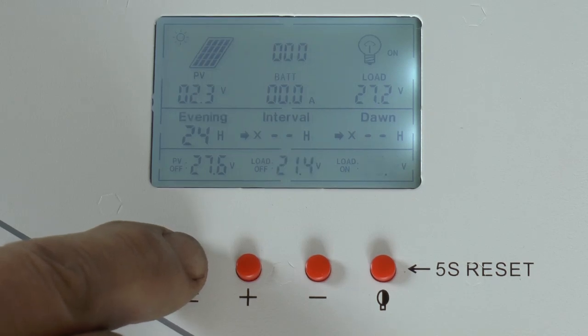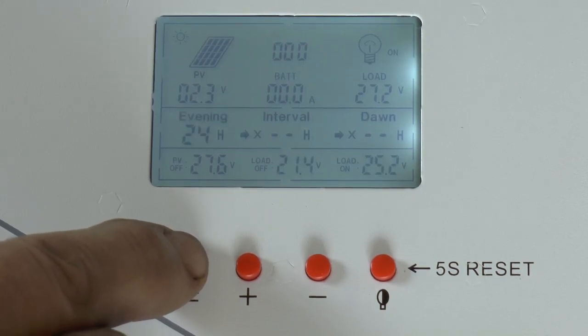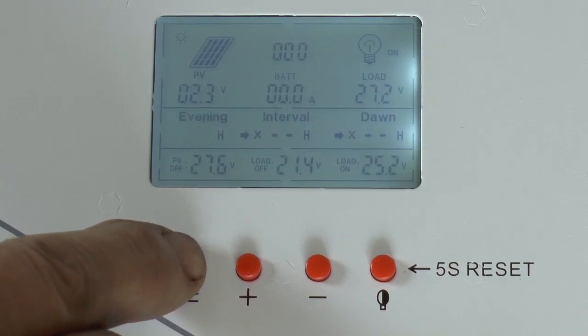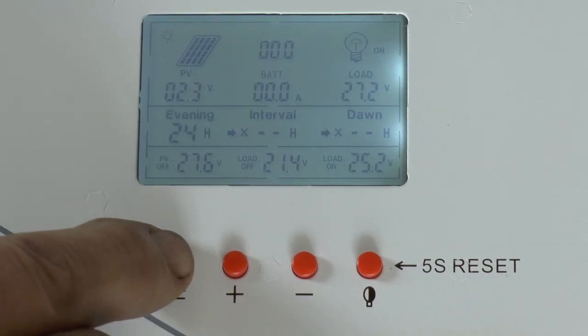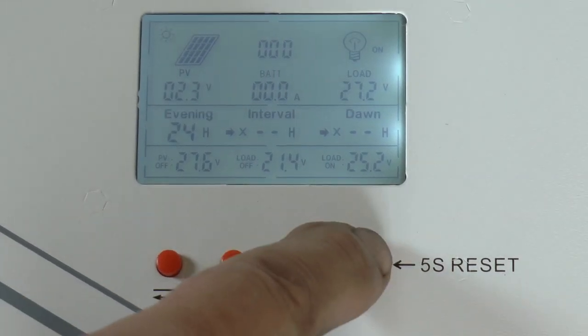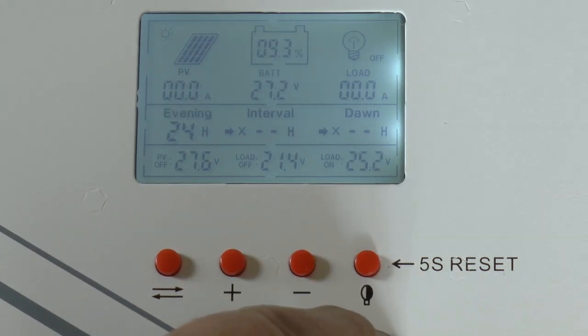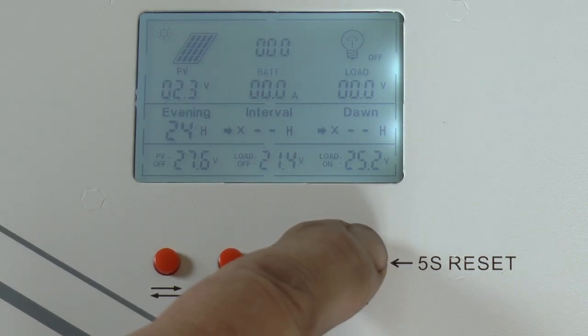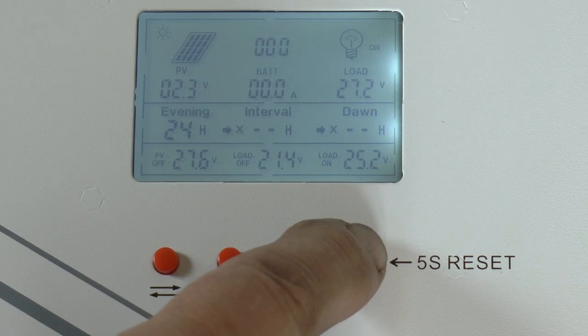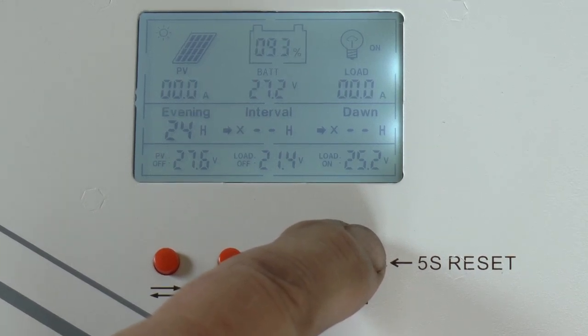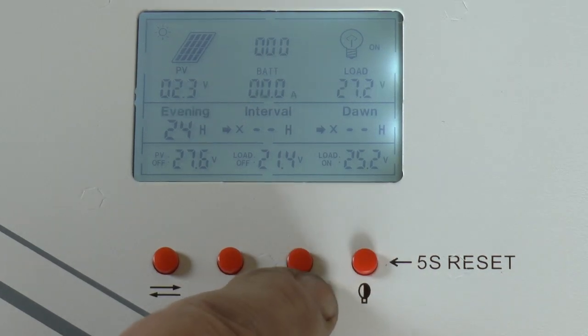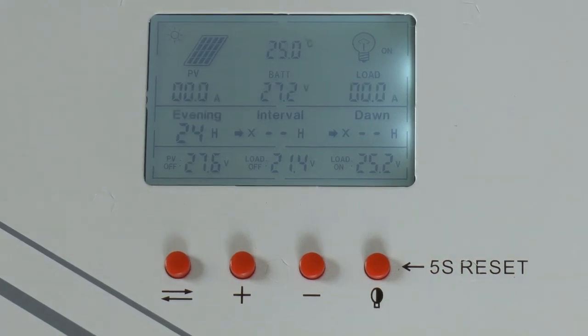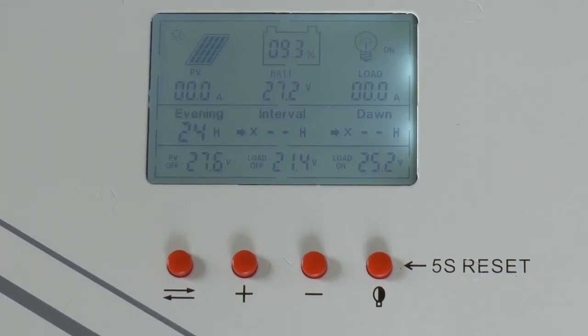Let's see - reset, plus, minus - let's just push some buttons. Load off, 24 hours, evening. Okay, so that's not doing me much good. It says my batteries are 93% charged. I hope it would know that because I haven't told it anything yet, doesn't know what size they are. I'm gonna look in that manual one more time, see if I can see anything about setting this thing up.